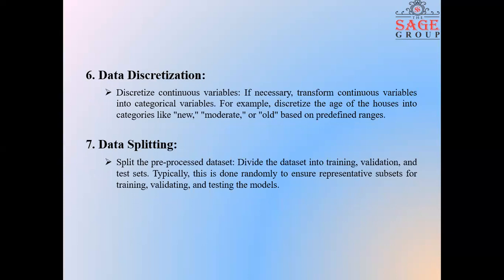Next is data discretization. Discretize continuous variables. If necessary, transform continuous variables into categorical variables. For example, you can discretize the age of the houses into categories like new, moderate or old based on predefined ranges.